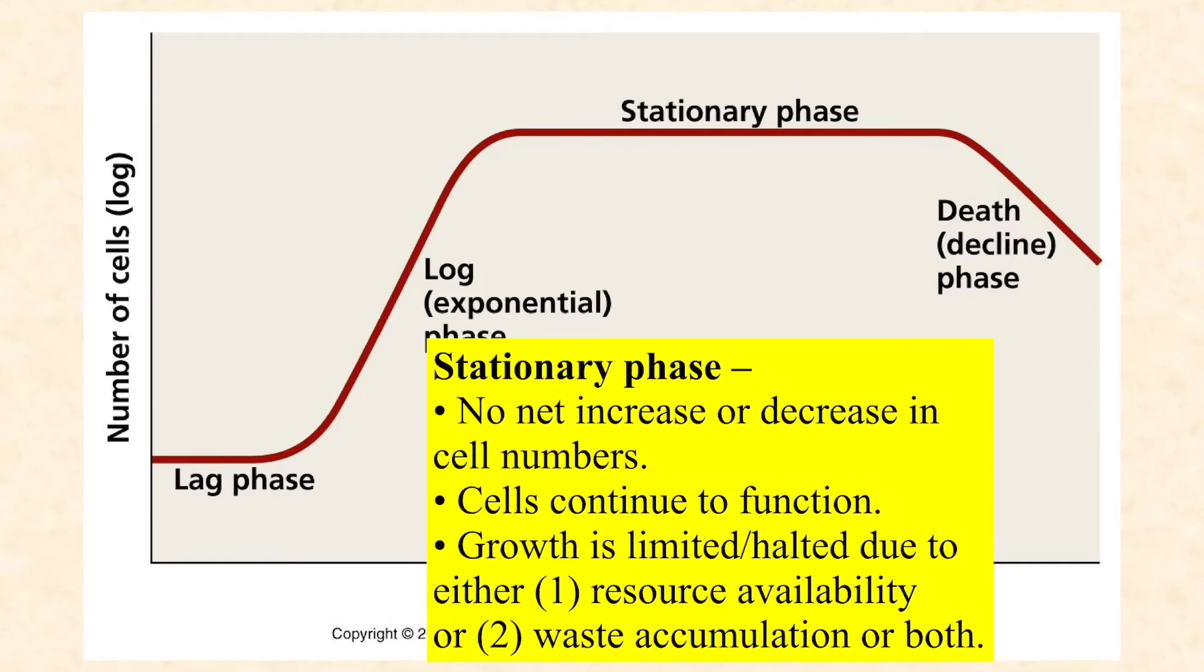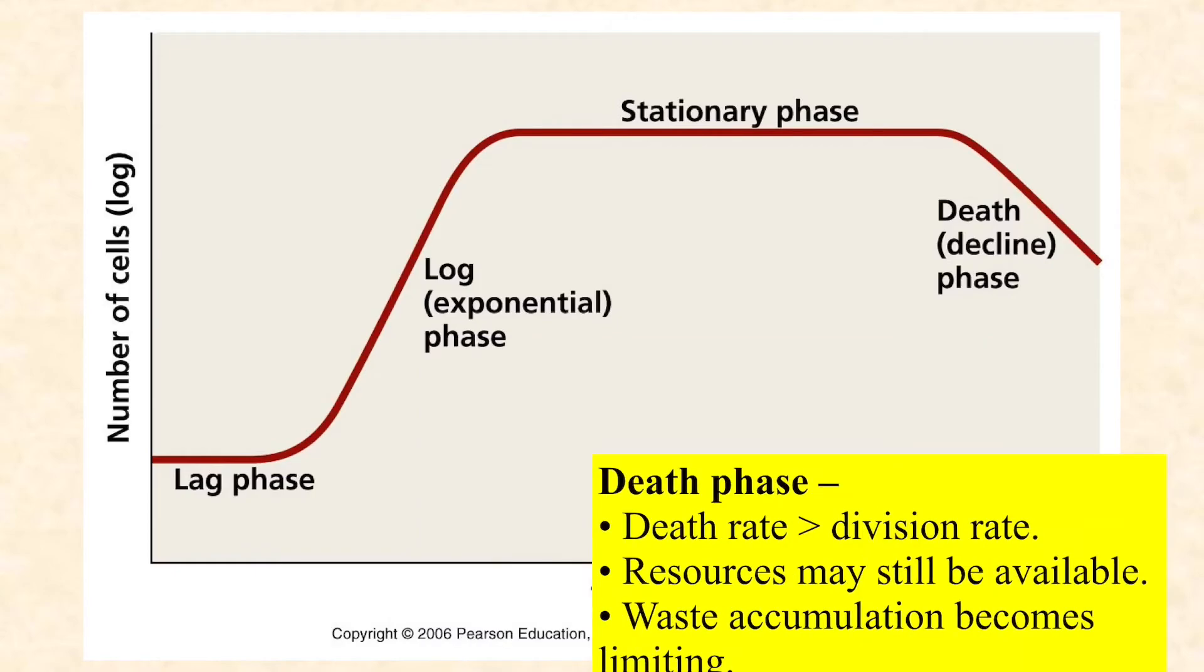And then finally, if left in stationary phase long enough, wastes will accumulate to the point of causing irreversible damage to some proteins and membranes and so on. And some of the cells will lose their viability. We call this death phase where maybe a cell, one cell is lucky enough to find some resources and decides to divide, but most of the cells are actually dying off at this point. So there may still be some resources available, particularly if you're recycling old dead cells, but waste accumulation is becoming limiting at that point.